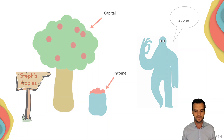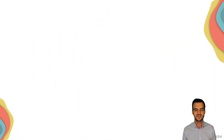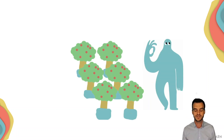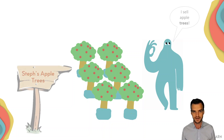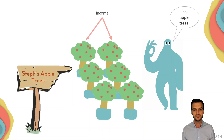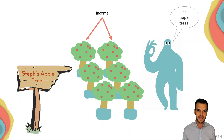Now let's say that Stephanie owns a nursery. Steph doesn't sell apples, but she sells apple trees and other trees. In this case, the apple trees are no longer capital — the money that she earns from selling the apple trees is actually income. This demonstrates how in different situations the same asset could be either capital or income, depending on the situation.